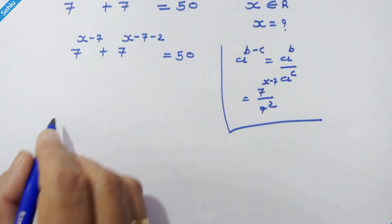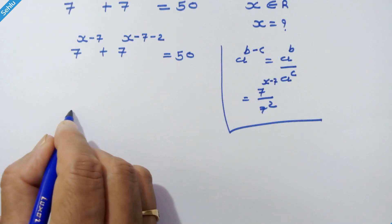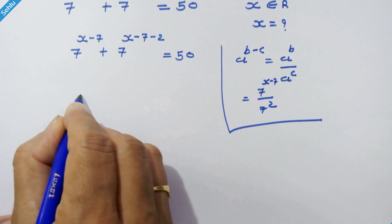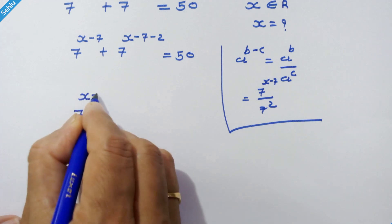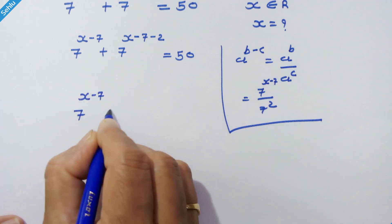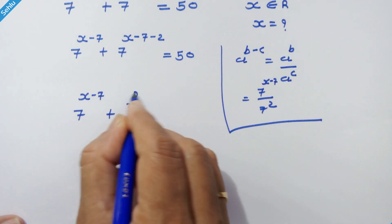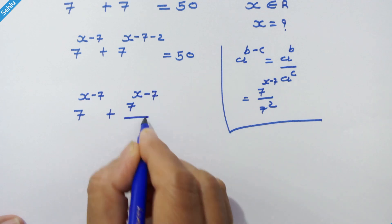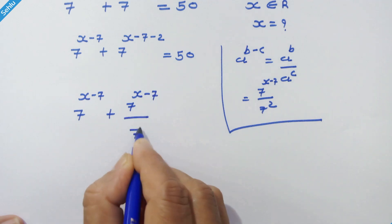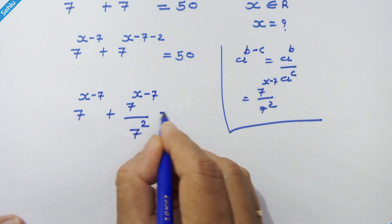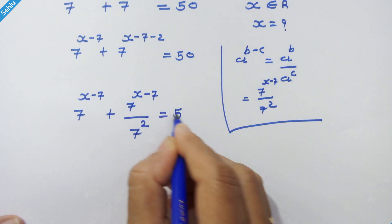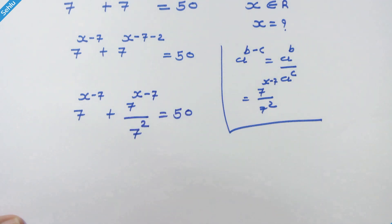So here we have 7 raised to x minus 7 plus 7 raised to x minus 7 upon 7 square is equal to 50.